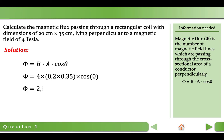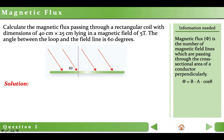Let's proceed to the second question. Question 2: Calculate the magnetic flux passing through a rectangular coil with dimensions of 40 cm by 25 cm lying in a magnetic field of 5 teslas. The angle between the loop and the field line is 60 degrees. The question is very similar to the first one. The main difference is the angle.